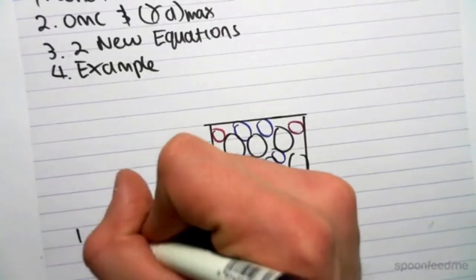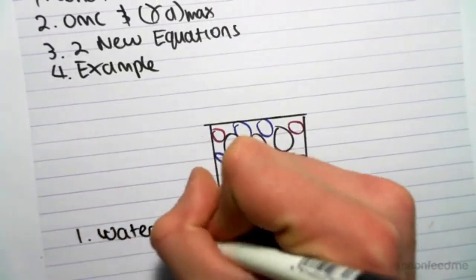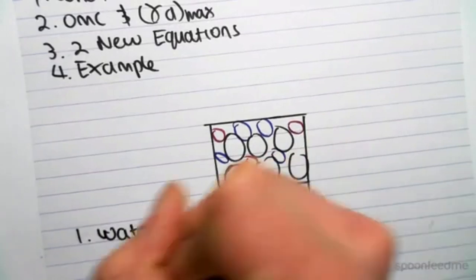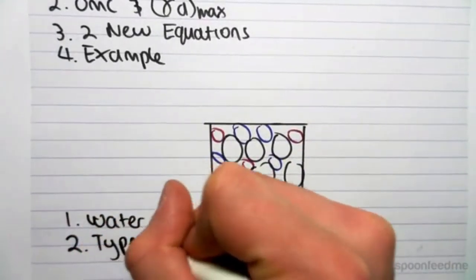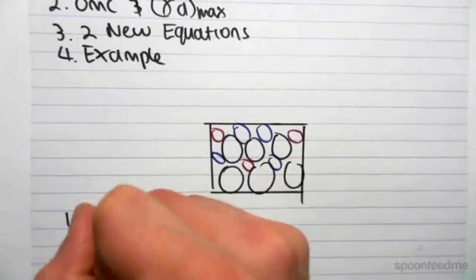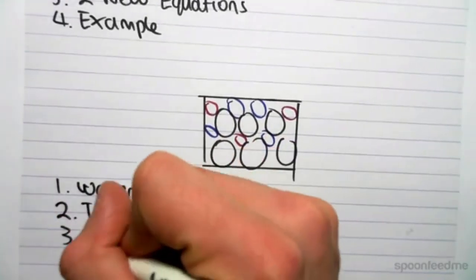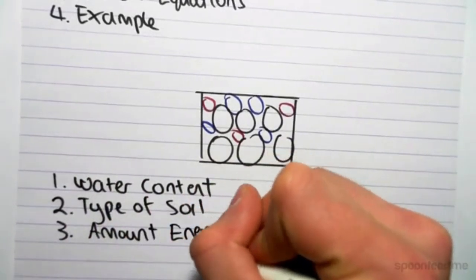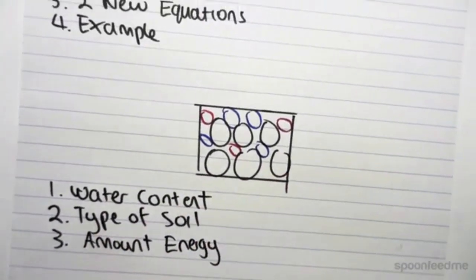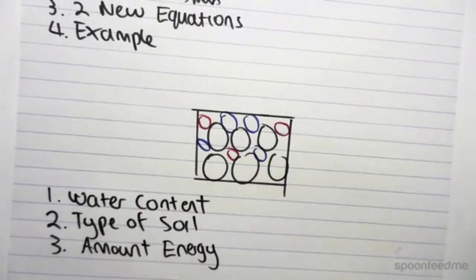The first thing it's dependent on is the water content, so how much water we have in our soil sample. The second thing it's dependent on is the type of soil. And the third thing it's dependent on is the amount of energy we put into the system.